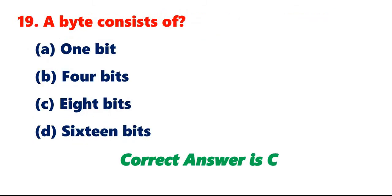Question 19: A byte consists of A. 1 bit. B. 4 bits. C. 8 bits. D. 16 bits. Correct answer is C.